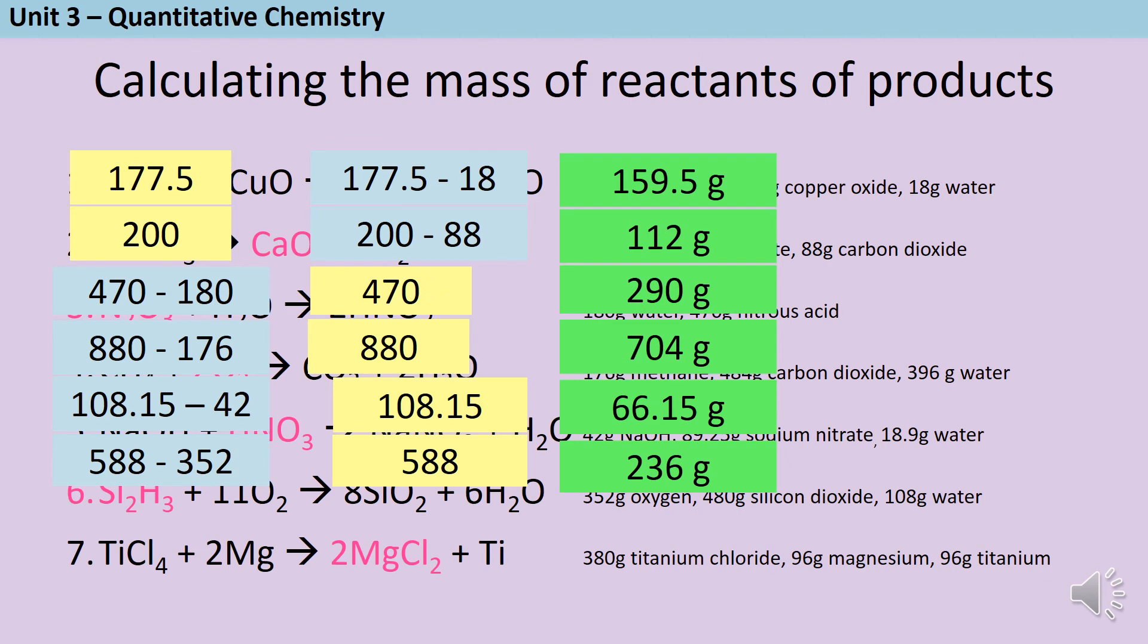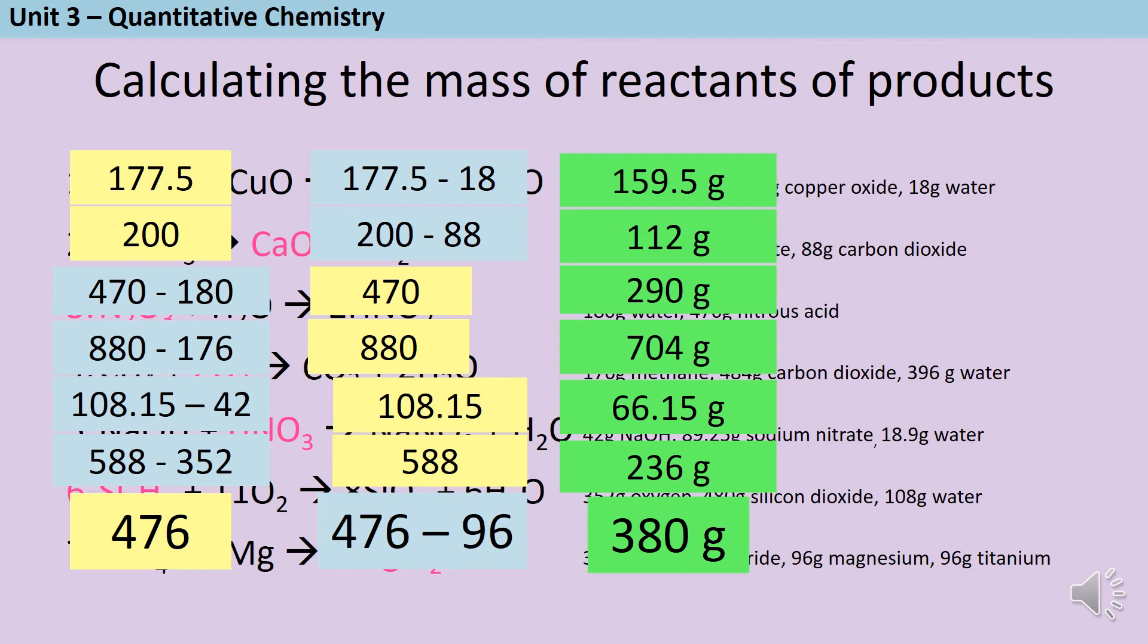Finally, for question number seven, the total mass of the titanium chloride and the magnesium together is 476 grams. So if we then subtract the mass of the titanium on the right hand side, we're left with 380 grams.